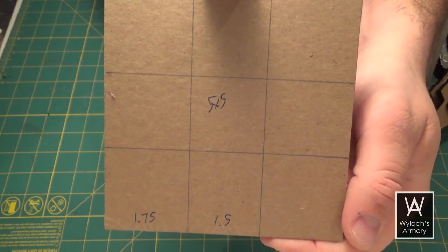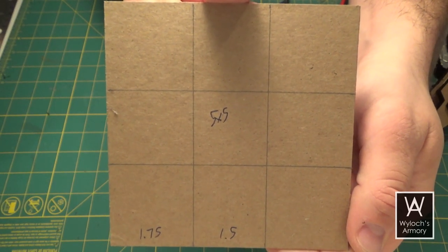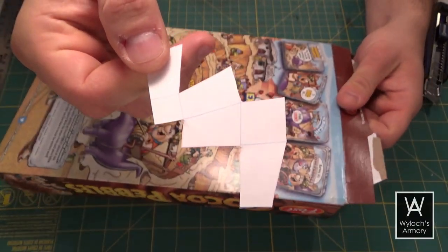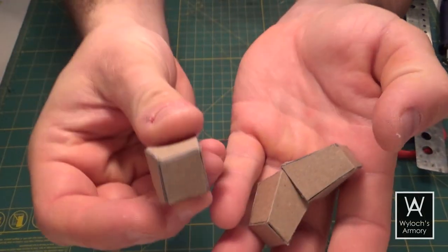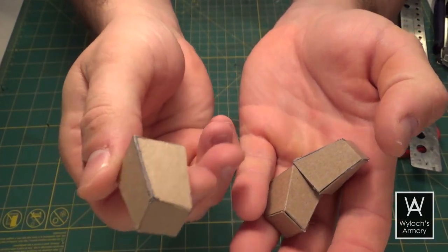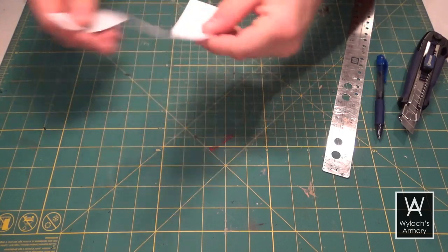Now print this smaller template and again build four of them from cereal box.